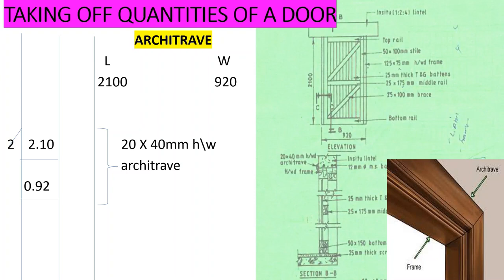So we are booking it in linear meter. We have the length of 2100 and then the width of 920. So this is by two because it's this side and the other side, but the width is one. So we have 2.10 by two and then we have 0.92, and then say 20 by 40 millimeters hardwood architrave. So guys, that is how you take off the two items. See you on the next video as we continue with the taking off.